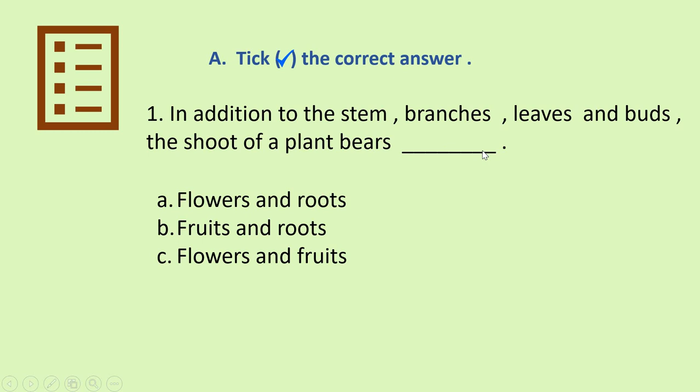In addition to the stem, branches, leaves and buds, the shoot of a plant bears what? Flowers and roots, fruits and roots, or flowers and fruits? Yes, come on tell me which is the correct answer. The correct answer is C part, flowers and fruits.